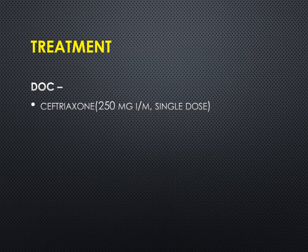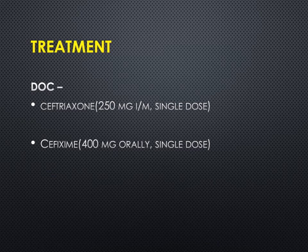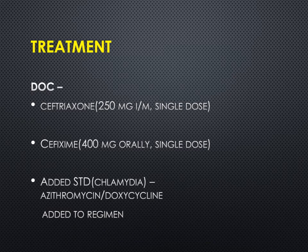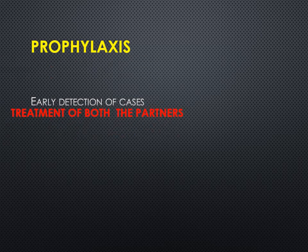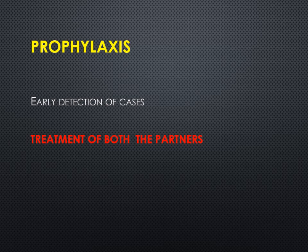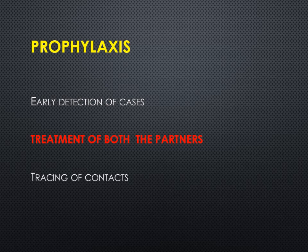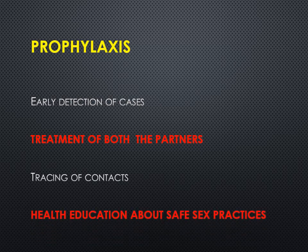For treatment, the drug of choice is ceftriaxone; cefixime can be used for oral treatment. Since gonococcal urethritis is often associated with co-infection with Chlamydia, it is recommended to add azithromycin to ceftriaxone to cover chlamydial infection as well. Prevention includes early detection of cases, treatment of both partners, contact tracing and treatment of contacts, and health education about safe sex practices.